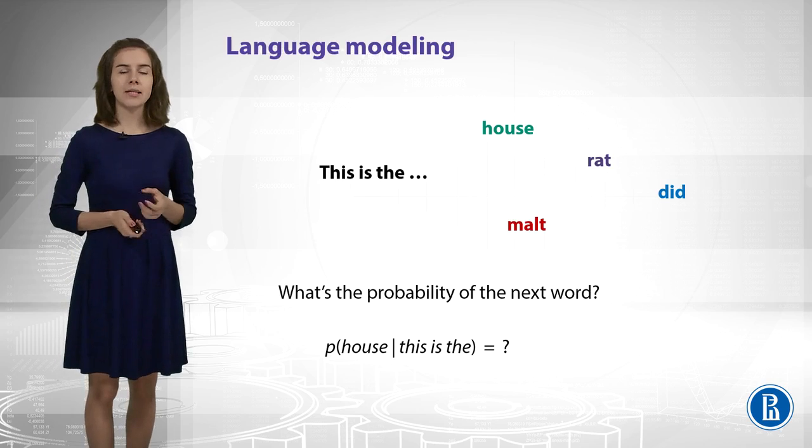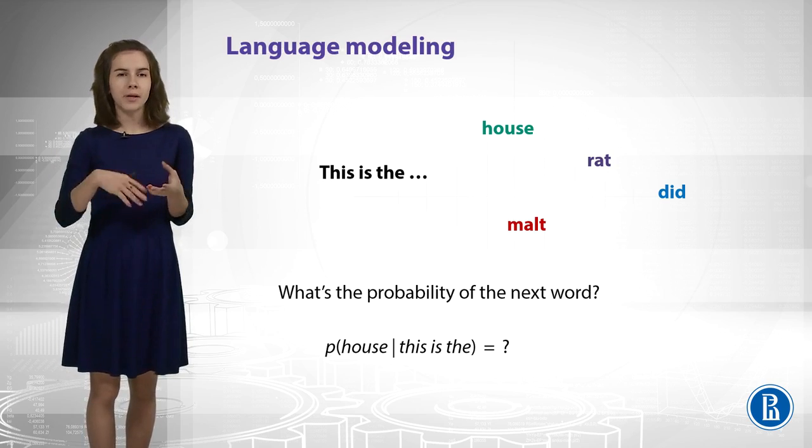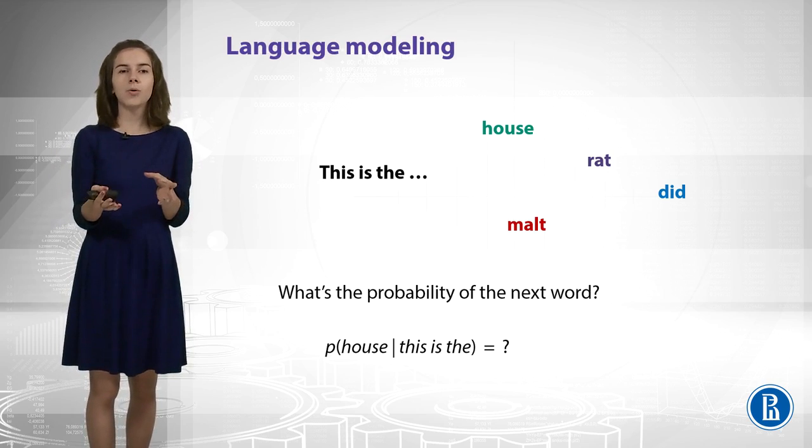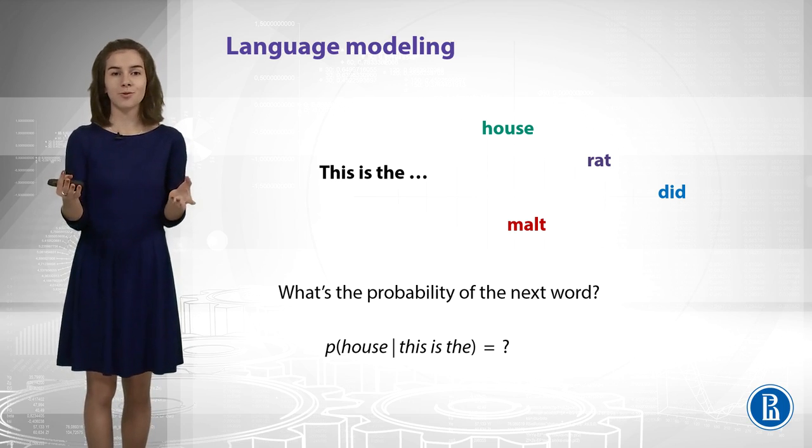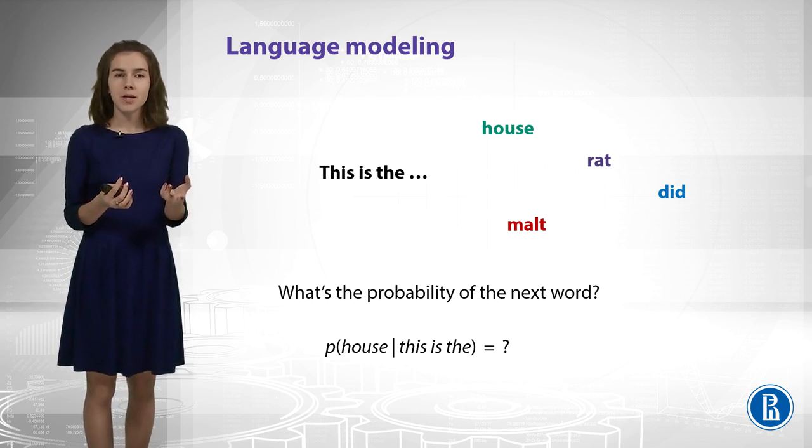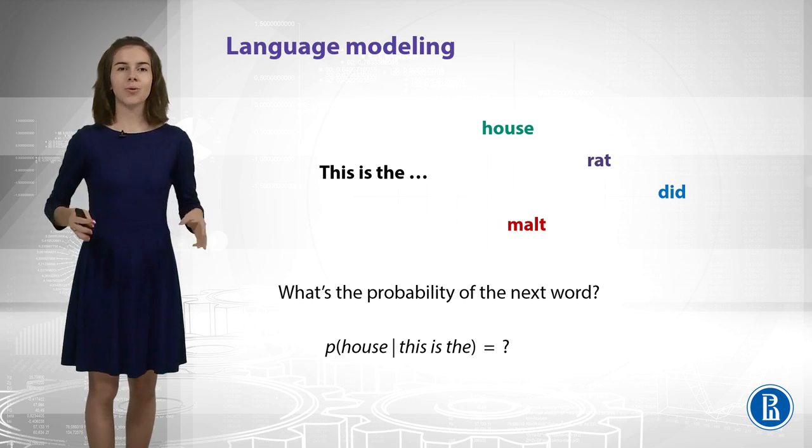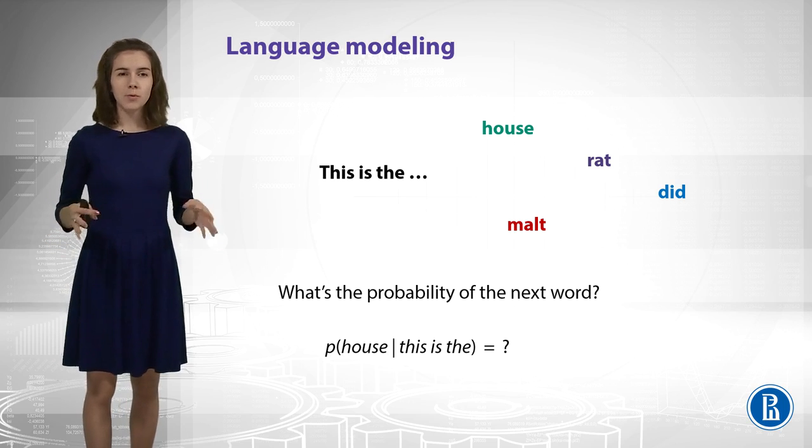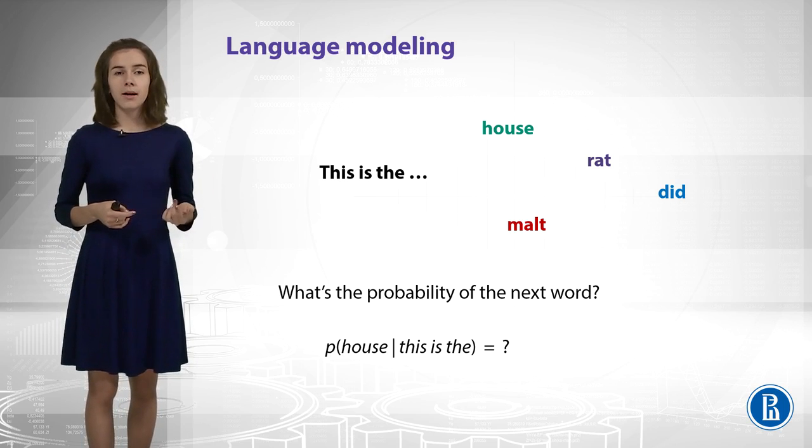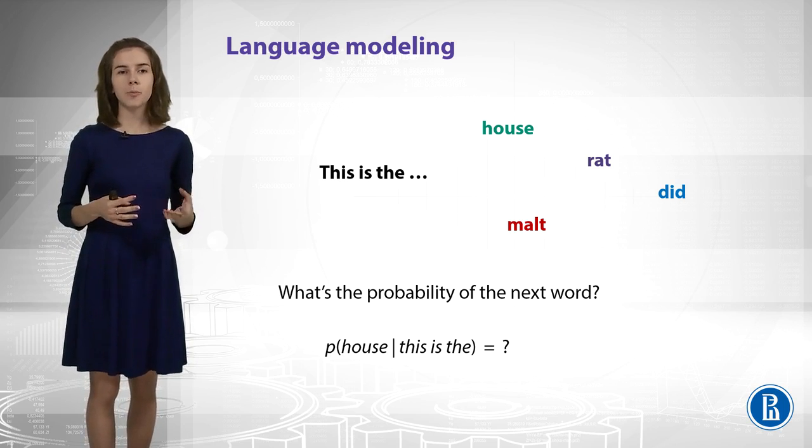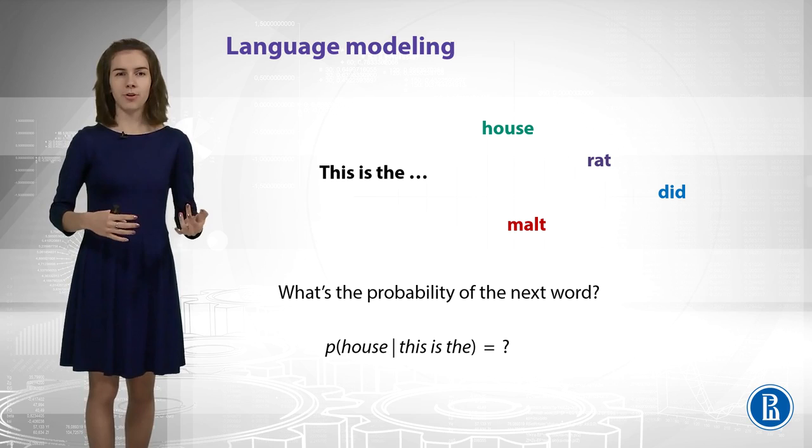Imagine you see some beginning of a sentence, like 'this is the.' How would you continue it? Probably as a human you know that 'this is house' sounds nice, or 'this is did' sounds not nice. You have some intuition. So how do you know this? Well, you have read some books, you have seen some texts. So that's obvious for you. Can we build similar intuition for computers? Well, we can try. So we can try to estimate probabilities of the next word given the previous words. But to do this, first of all, we need some data.